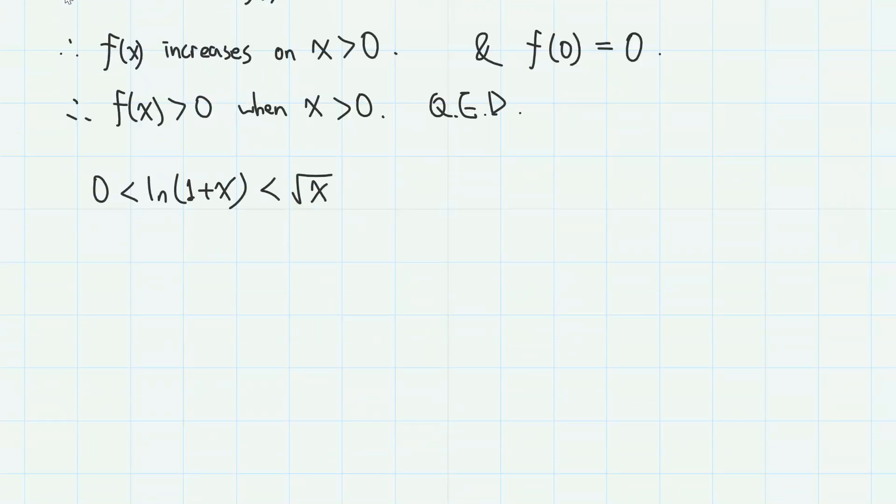Next, from this inequality which we have just proved, we divide by x, which is positive, so the inequality signs stay the same. And we have ln(1 + x)/x is greater than 0 and less than 1/√x.